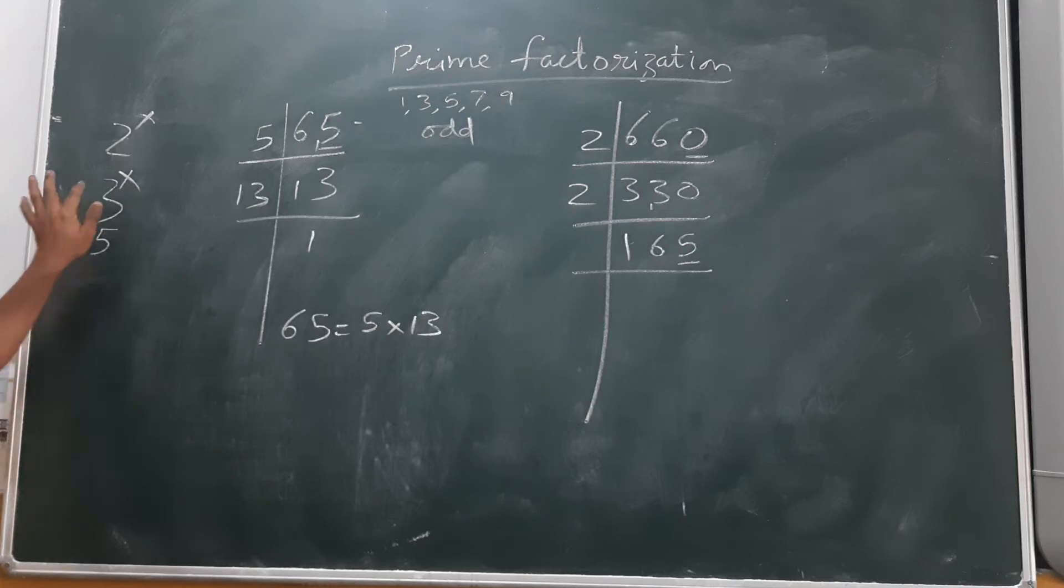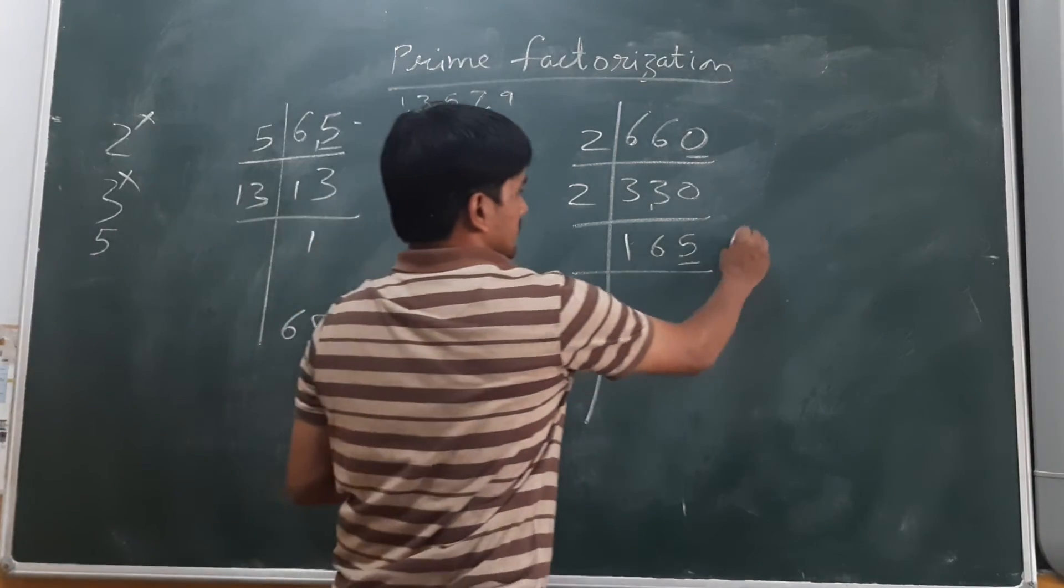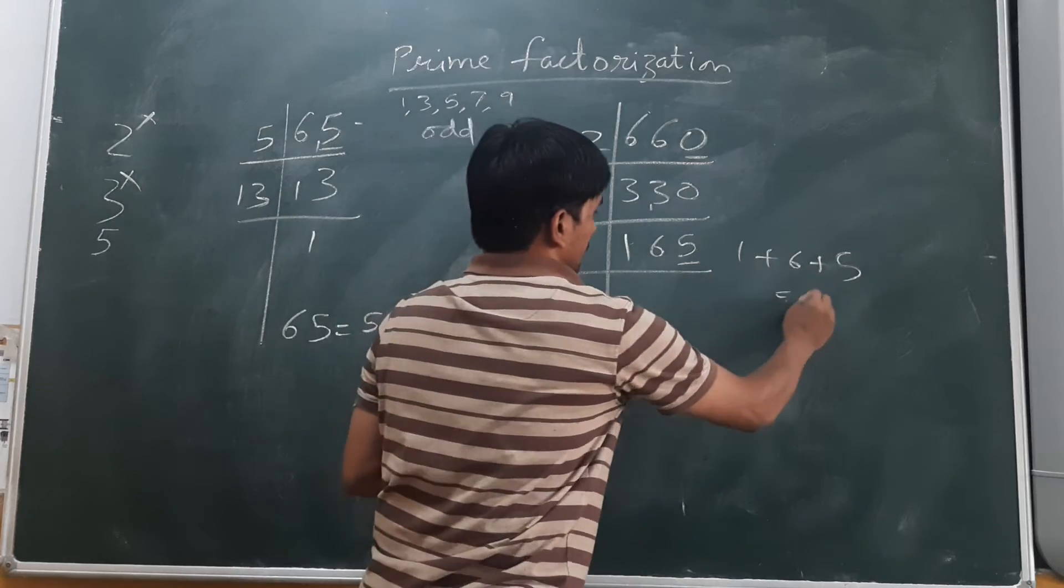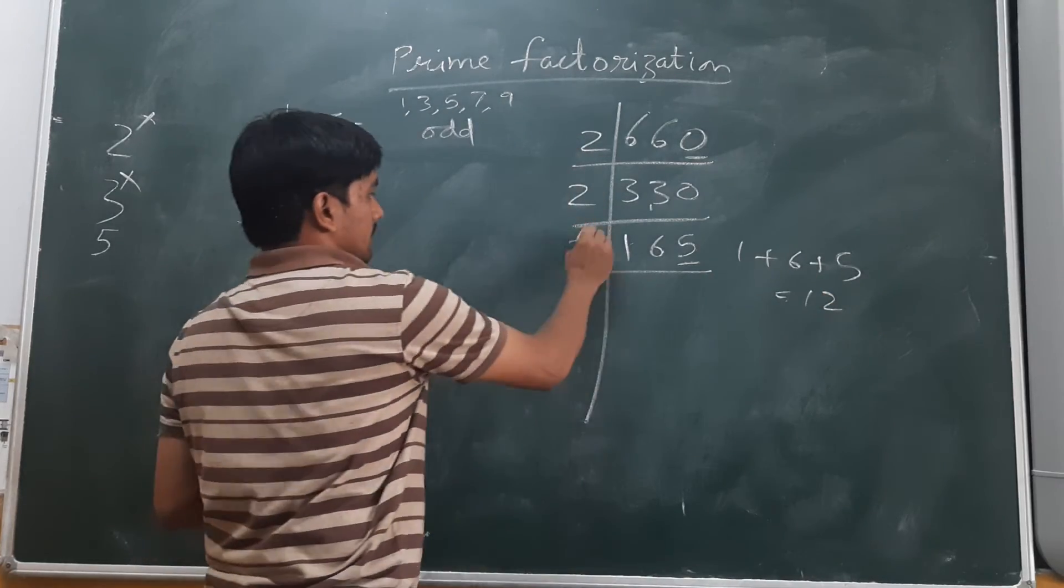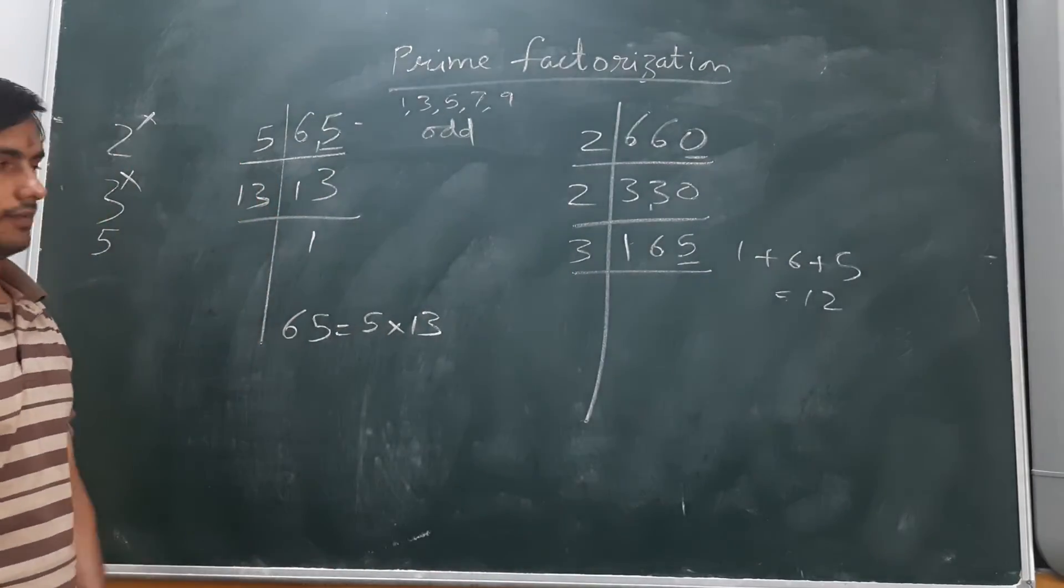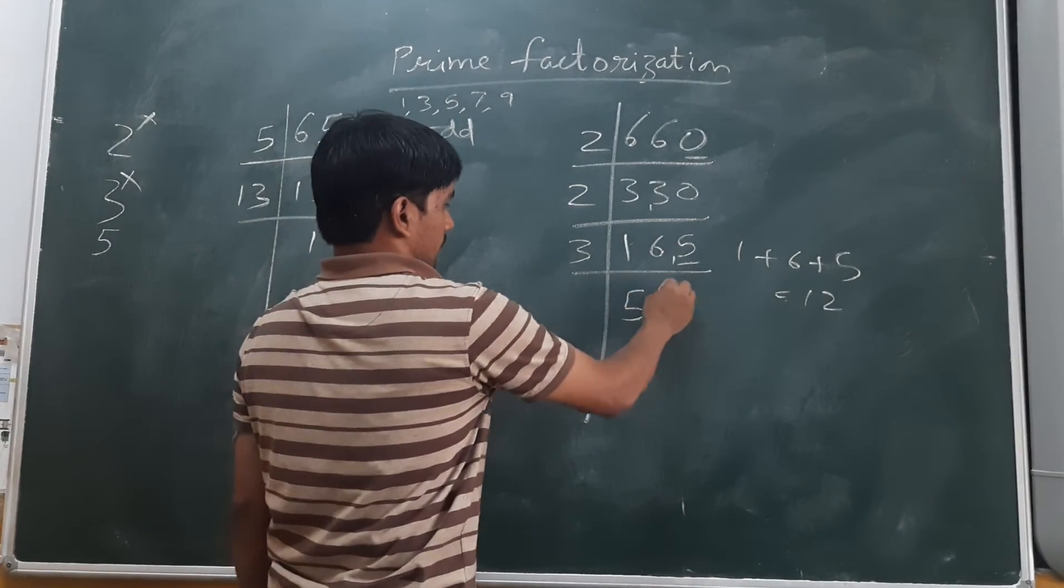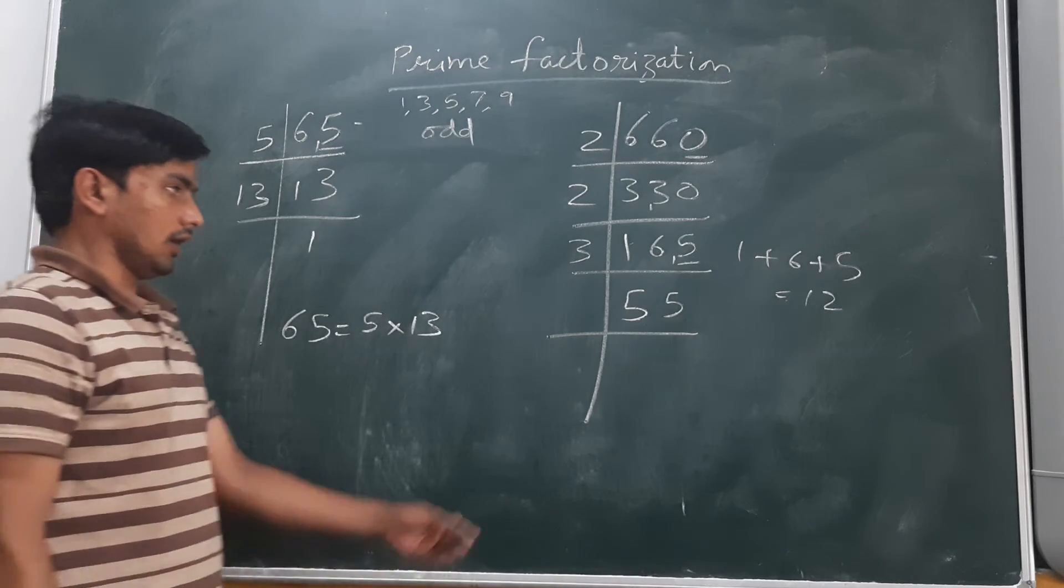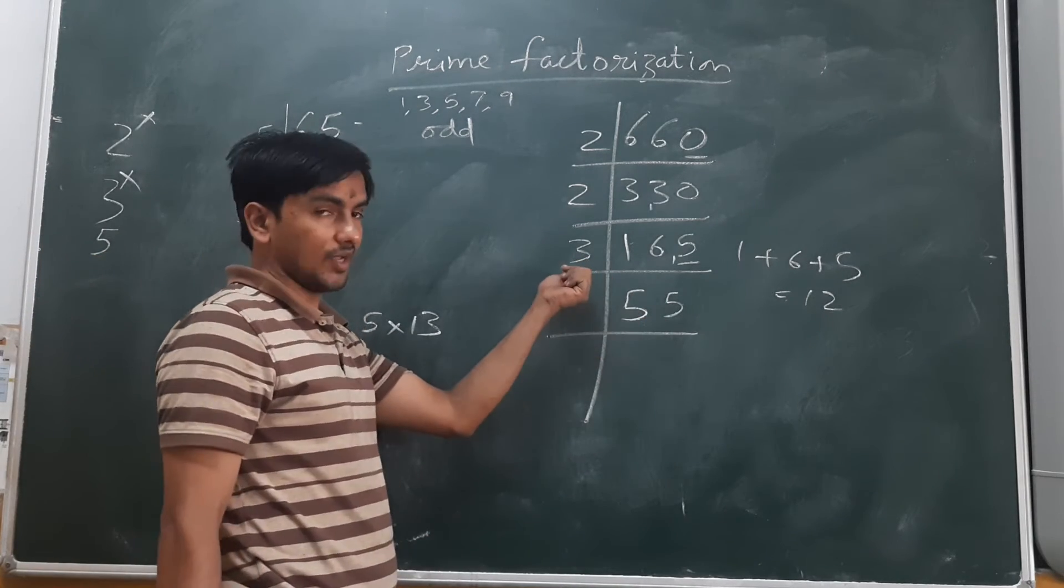We will come to 3. Let us see 1 plus 6 plus 5, 6 plus 5 is 11, this one is 12. It means this number is divisible by 3. 3 times 55 is 165. Now 55 will not go by 3.